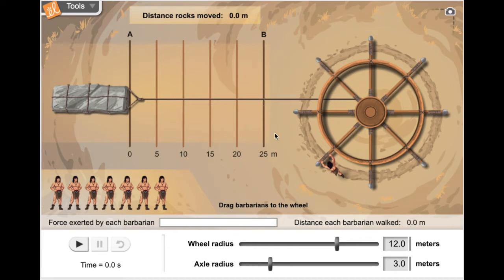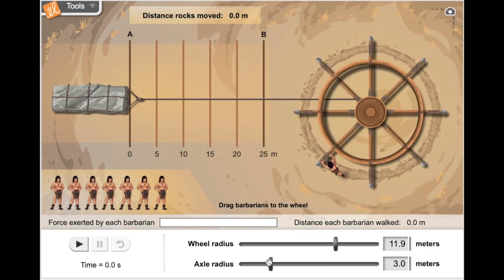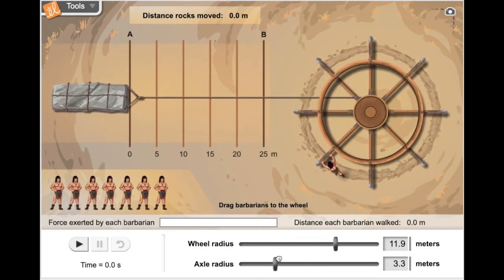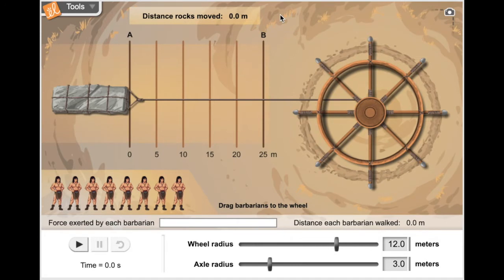What we can do is change the size of the wheel, or the size of the axle, and see which makes it the easiest for the barbarians. We can start by figuring out the minimum input force, that's the number of barbarians, needed to move this rock using this wheel and axle.